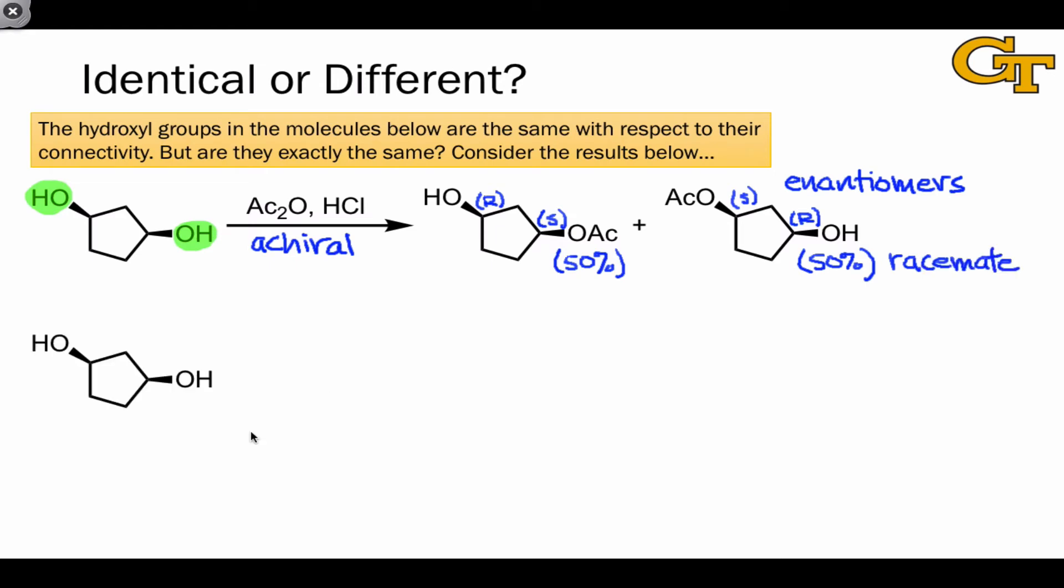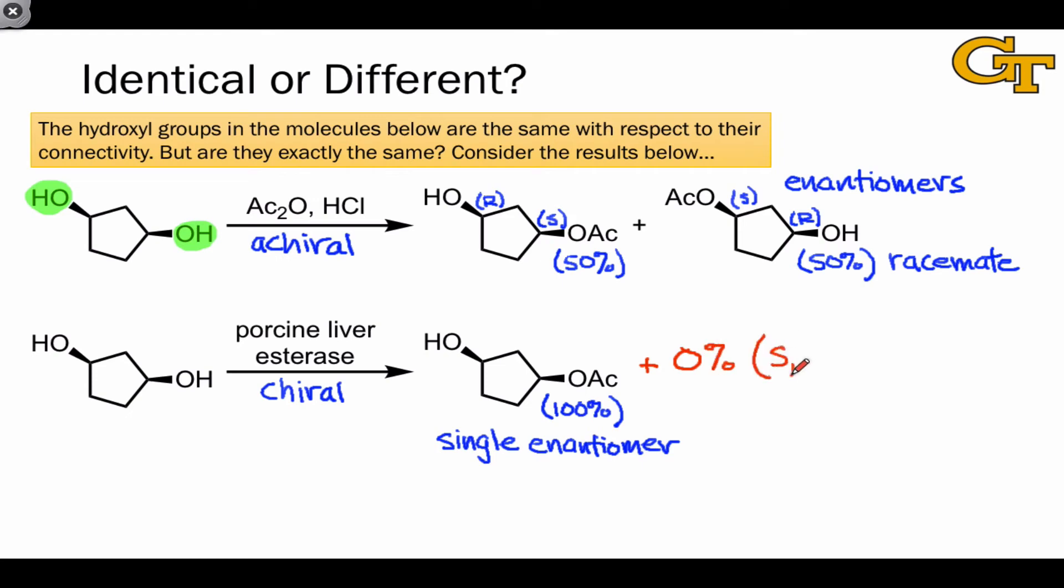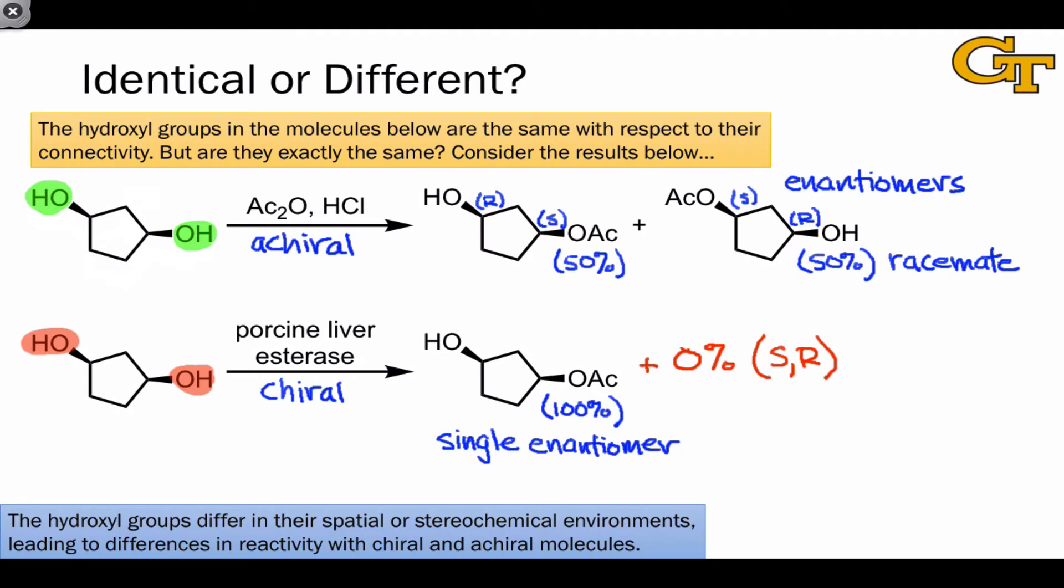What happens when we treat the same compound with the chiral reaction conditions, the porcine liver esterase? Well, now we observe something remarkable. The yield is 100% of a single enantiomer. We observe essentially a 0% yield of the SR compound shown above here. What's interesting about this is that the hydroxyl groups are behaving equivalently in the top case, since we're getting 50% yields of both enantiomers, but differently in the bottom case, since we're getting different yields of the two enantiomers, 100% and 0% in this case. And so clearly, because of the difference in the second case, the hydroxyls must differ somehow in their spatial environments.